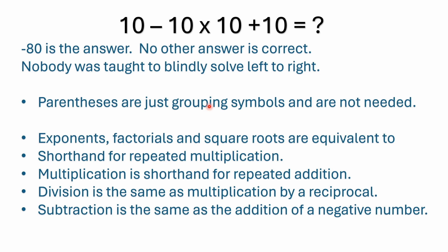Negative 80 is the answer. Nobody was taught to blindly solve left to right. Parentheses are just grouping symbols — they're not needed here. A lot of people say since there are no parentheses you go left to right, but that's not true. Parentheses just tell you to prioritize what's inside them; they don't change the fact that exponents, factorials, and square roots still have priority, and that multiplication and division have priority over addition and subtraction. Subtraction is the same as the addition of a negative number, which is why addition and subtraction have equal precedence.